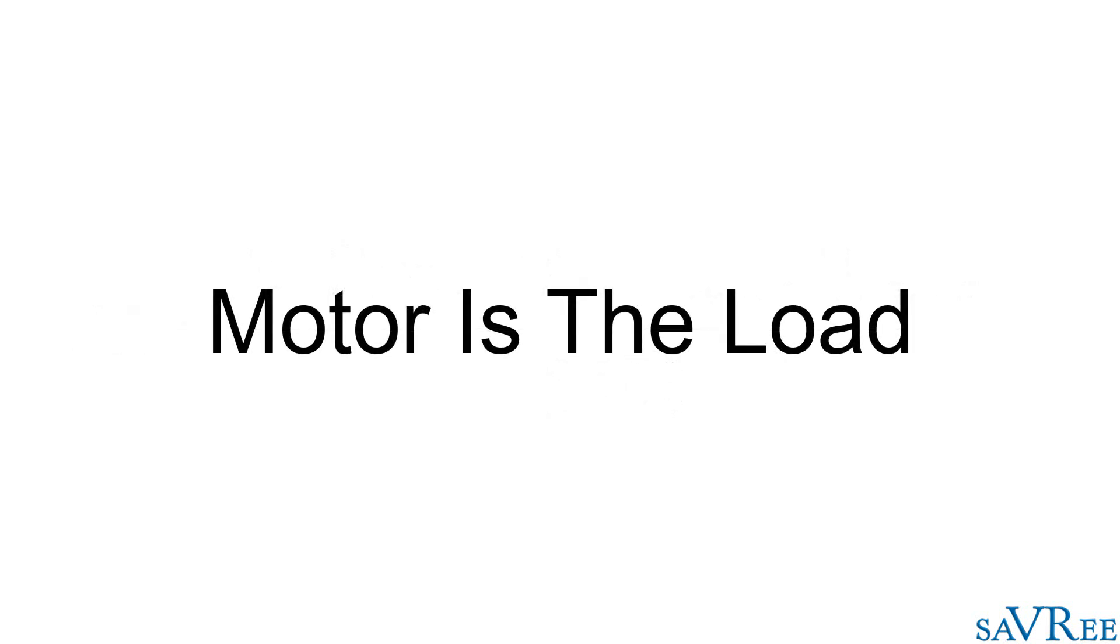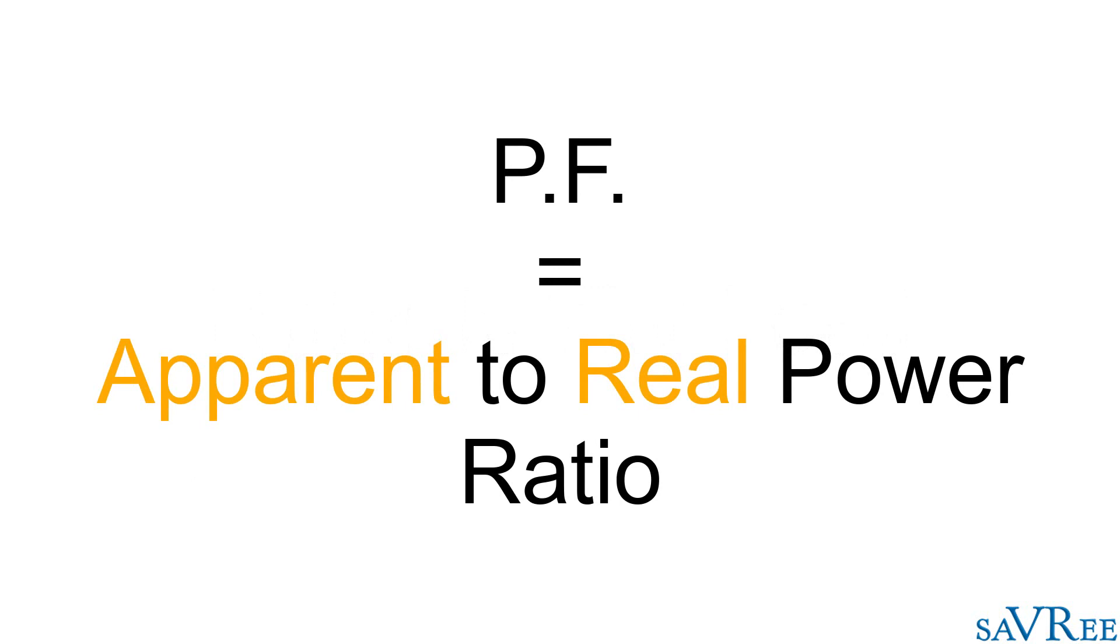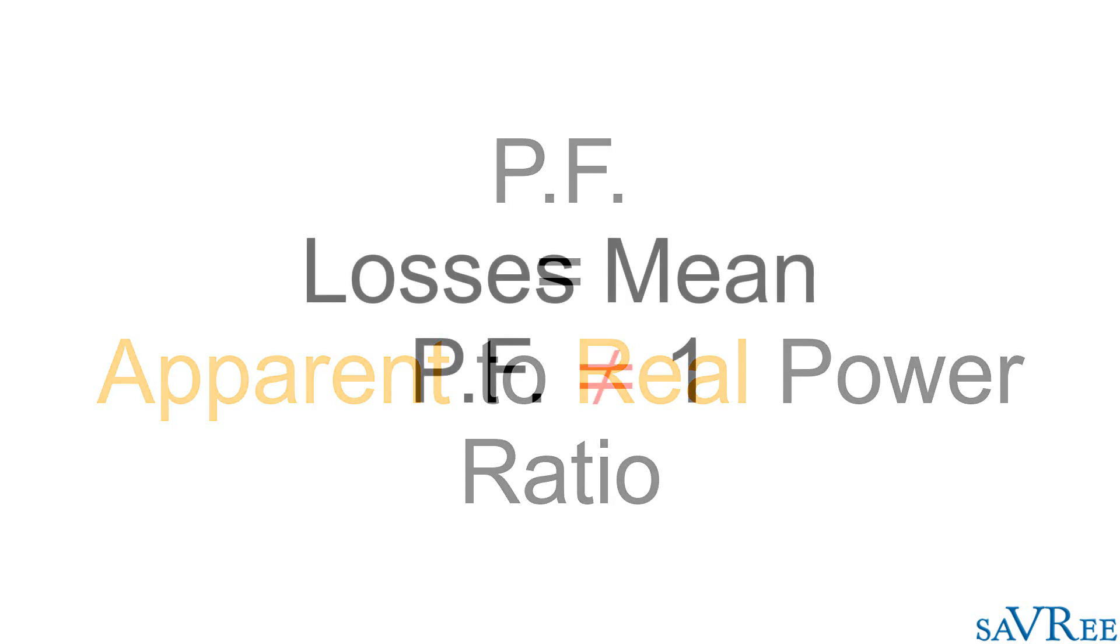The power factor can be thought of as the relationship between the apparent power and the real power. If the apparent power available equals the real power achieved, then we have a power factor of one. Unfortunately, there are always some losses within the system.